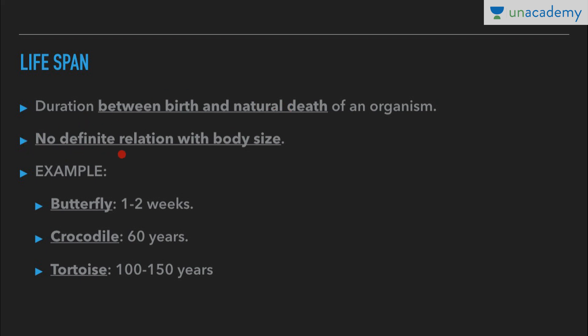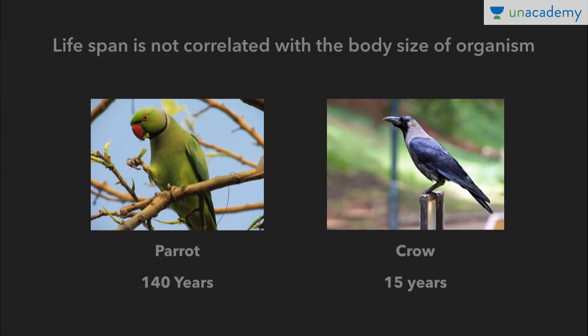An important feature of lifespan is that it has no definite relation with body size. For example, crow and parrot are almost the same size, but their lifespans vary. Similarly, mango and peepal trees are almost the same size, but the mango tree has a much shorter lifespan than the peepal tree. Examples: butterfly lives for 1 to 2 weeks, crocodile for 60 years, tortoise for 100 to 150 years. Parrot lives for 140 years and crow lives just 15 years.